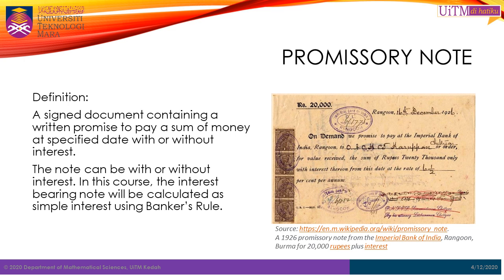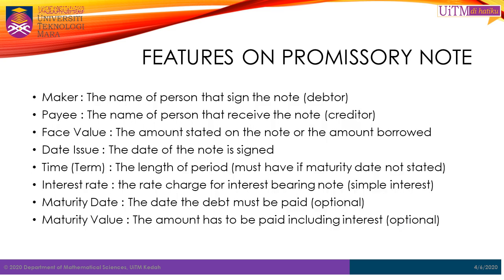Now that you already know what a promissory note is, let us look at the features or important information that must be included in writing a promissory note. The features of promissory notes in general must have the following: Number 1, the maker — the person that signed the note, or in this case the debtor. Number 2, the payee — the person that received the note, or the creditor.